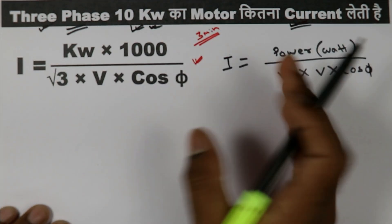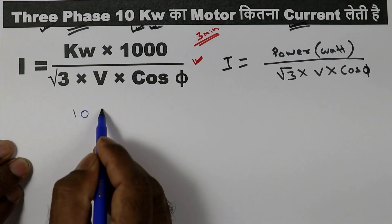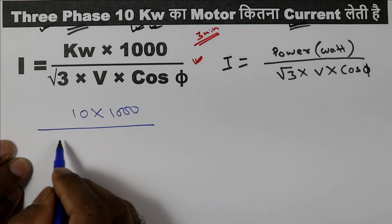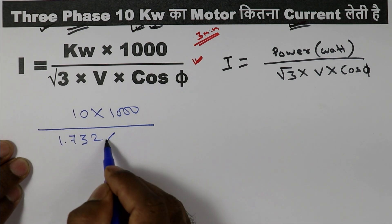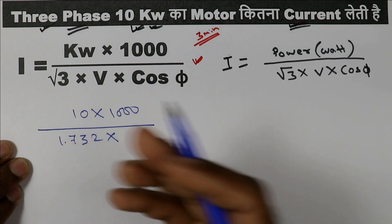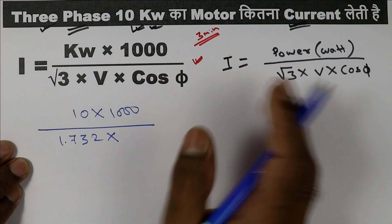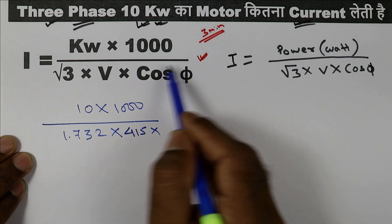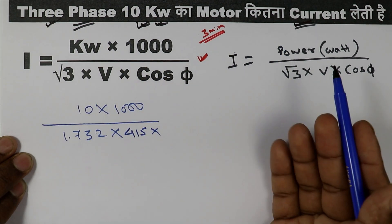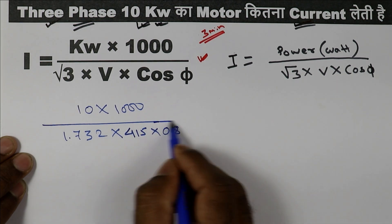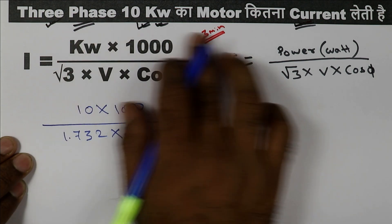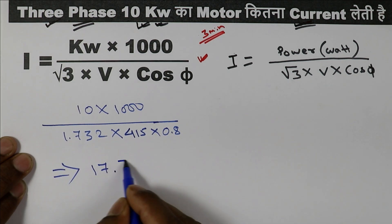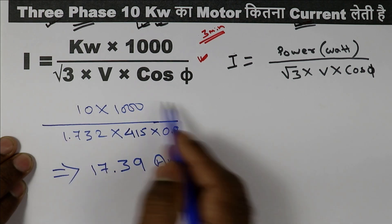First, convert kW into watts by multiplying by 1000 — kilo means 1000. Then divide by root 3, which is 1.732. Voltage: if not given in the question, assume 415V for 3-phase. Power factor: if not given, assume 0.8 — this is the standard way. When you solve this, the answer you will get is 17.39 ampere.